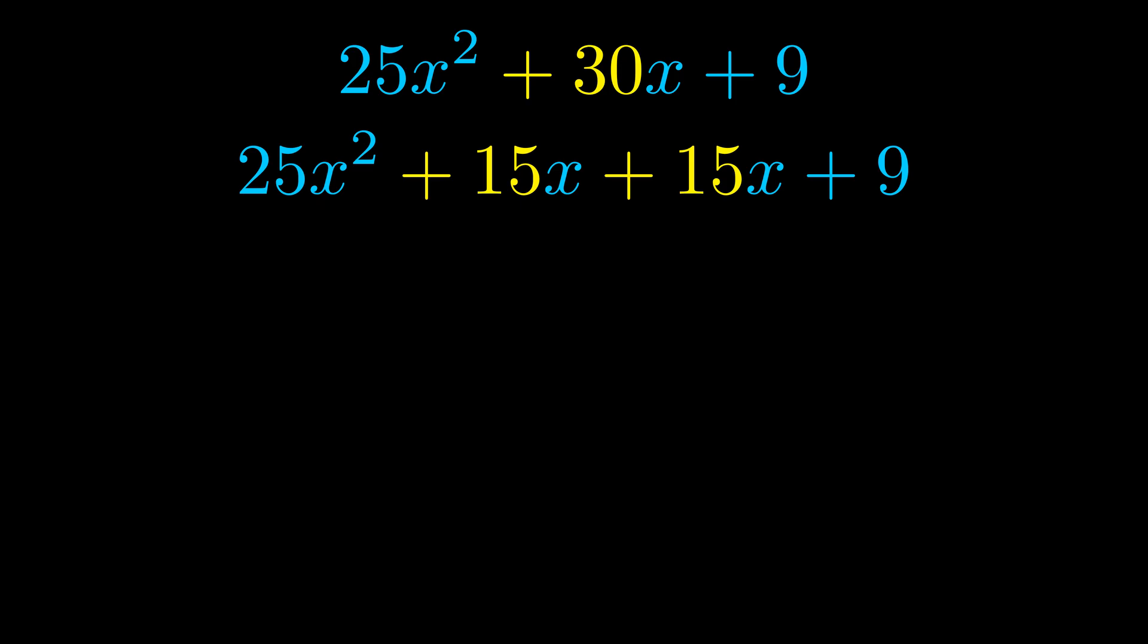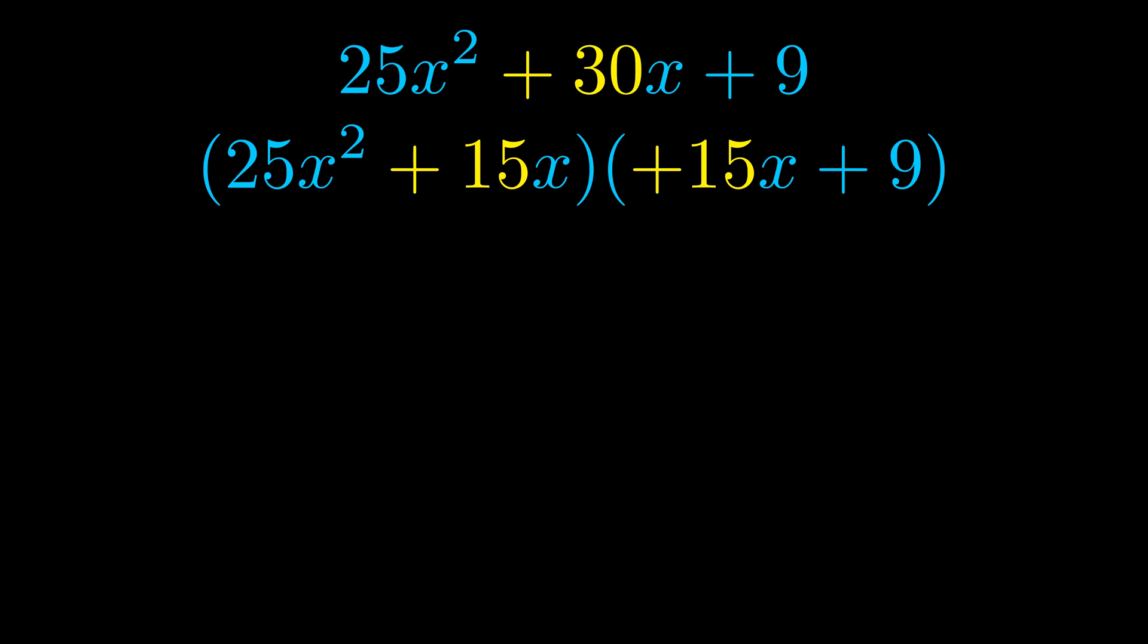Once we've done this we go ahead and we put parentheses around the first term and the last term. And we do that so that we can take the greatest common factor out of both terms. We can see the greatest common factor is now outside in green.